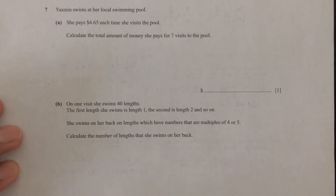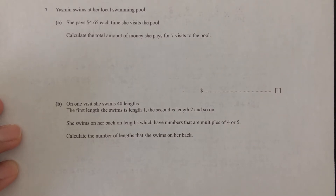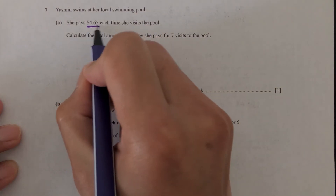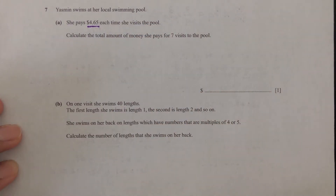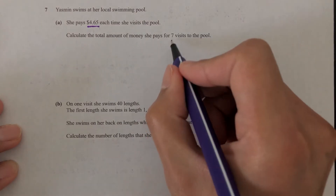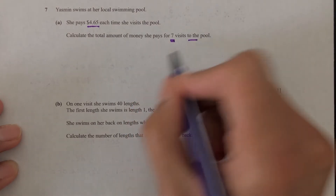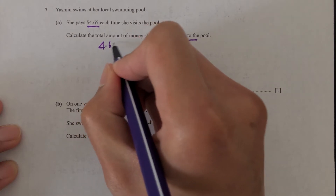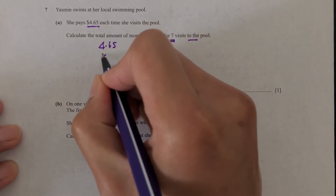Question number seven. Yasmin swims at a local swimming pool. Part A. She pays 4.65 each time she visits the pool — that's the cost every time she goes. Calculate the total amount of money she pays for seven visits to the pool. So we have 4.65 times 7.